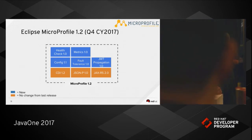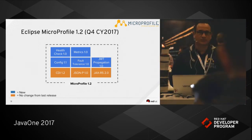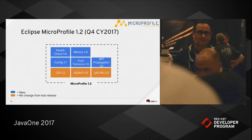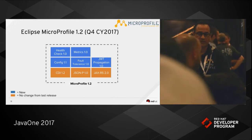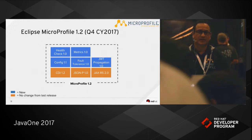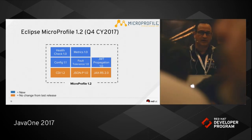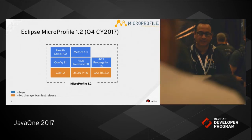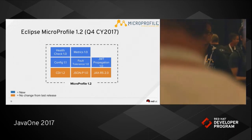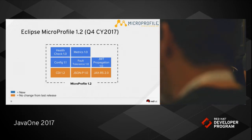Health Check is basically an API that allows you to implement a liveness or readiness-type functionality into your microservice. Metrics includes functionality to measure metrics like CPU, RAM, and similar measures — there's a variety of metrics being specified in the Metrics 1.0 API. Fault Tolerance has to do with functionality related to bulkheads and retries, to include this type of fault-tolerant functionality in your microservices.